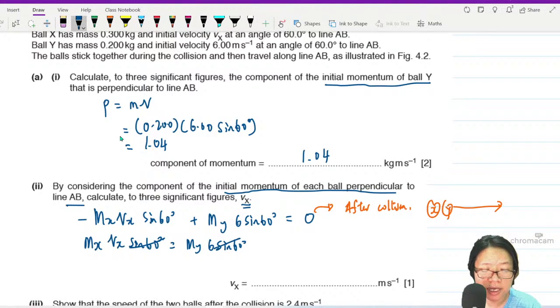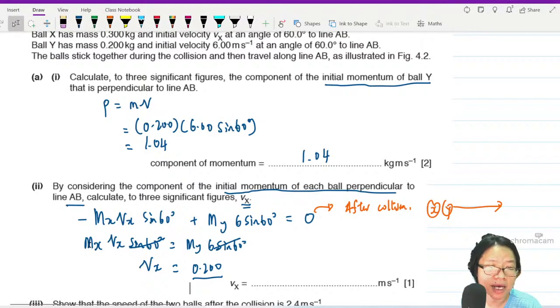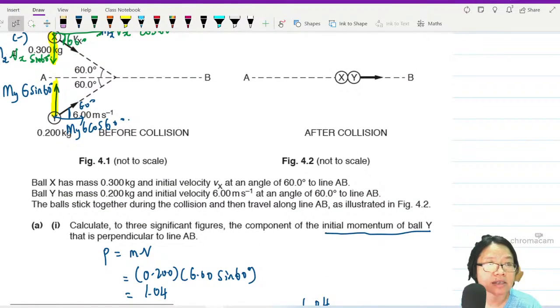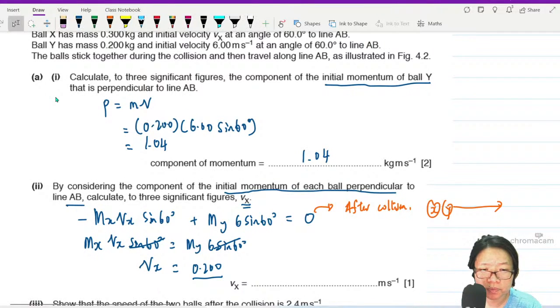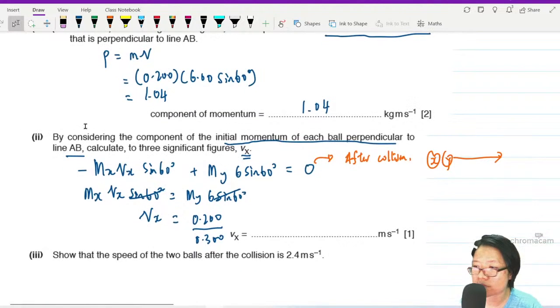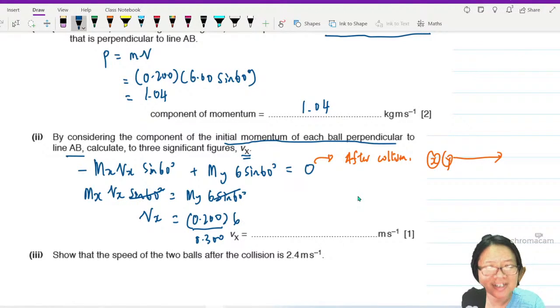The sine 60 and sine 60 can say bye-bye. So you want to find Vx, you will take the ratio of mass Y. Mass Y is 0.200 divide by mass X. Mass X is 0.300. There's a 6 here, so 1.2... 4.